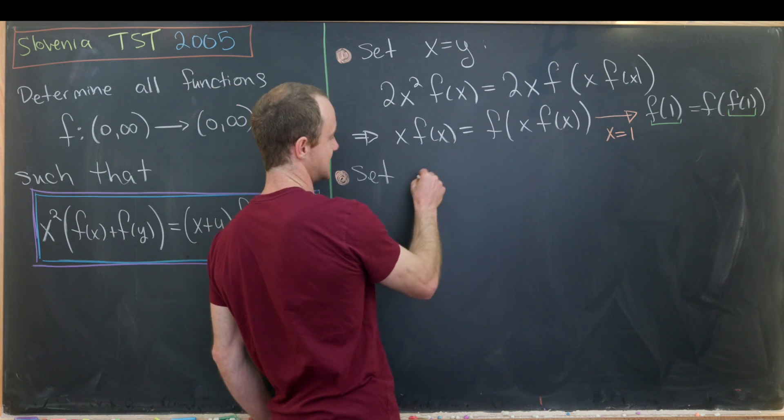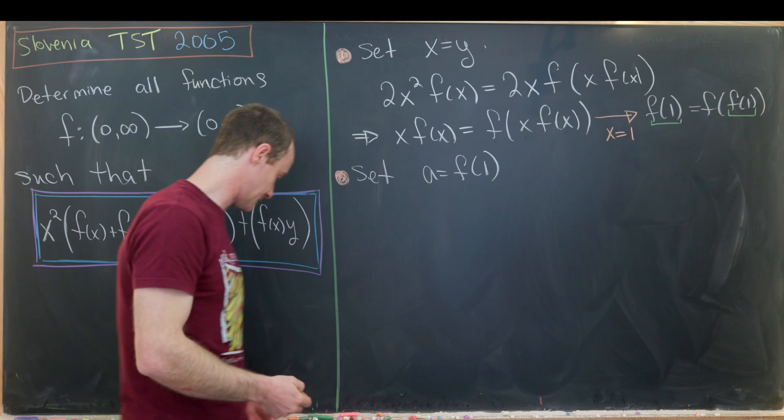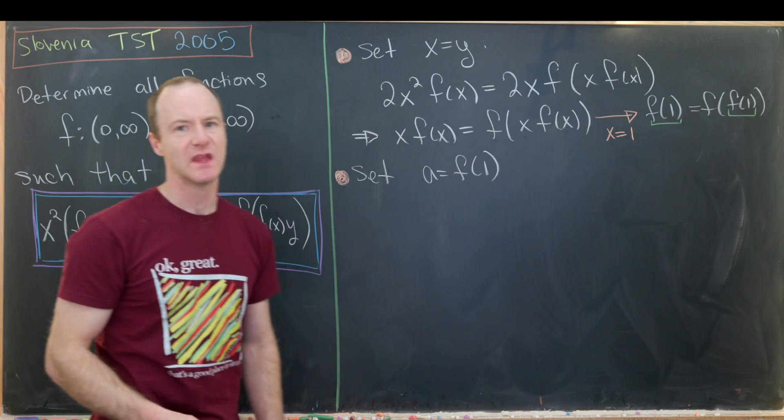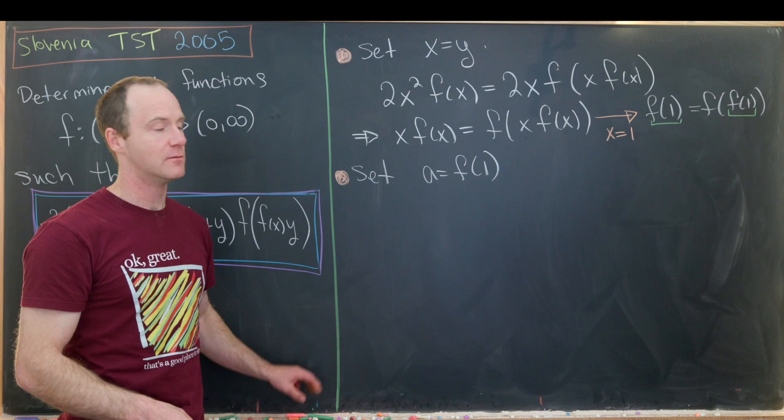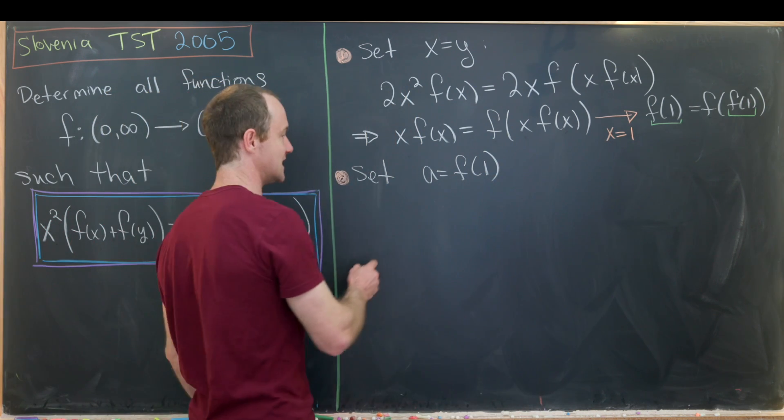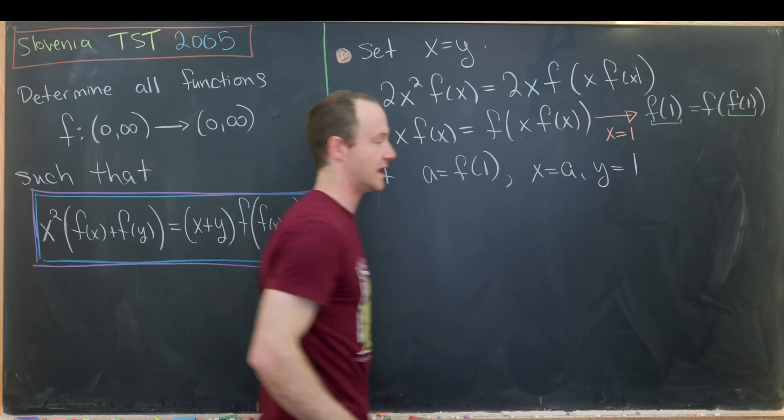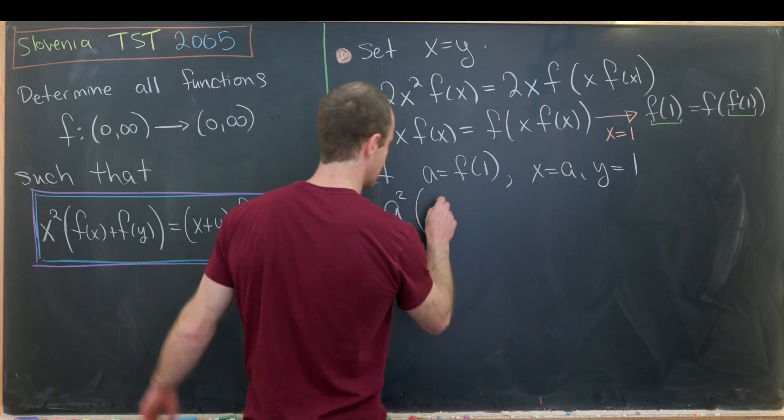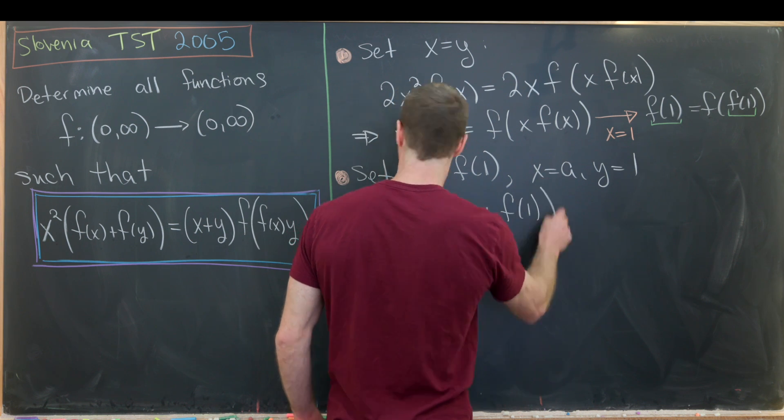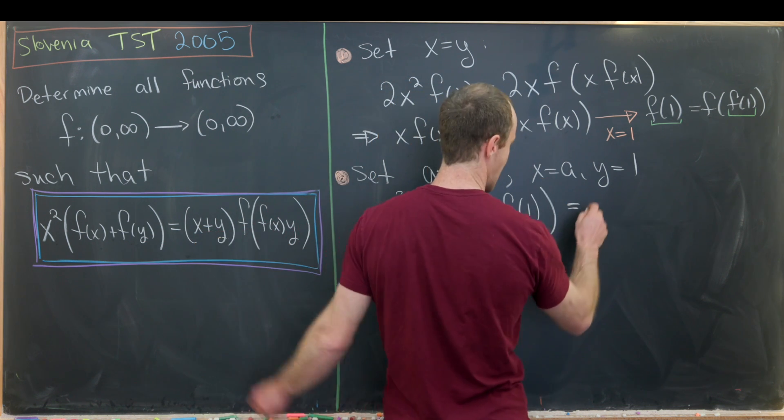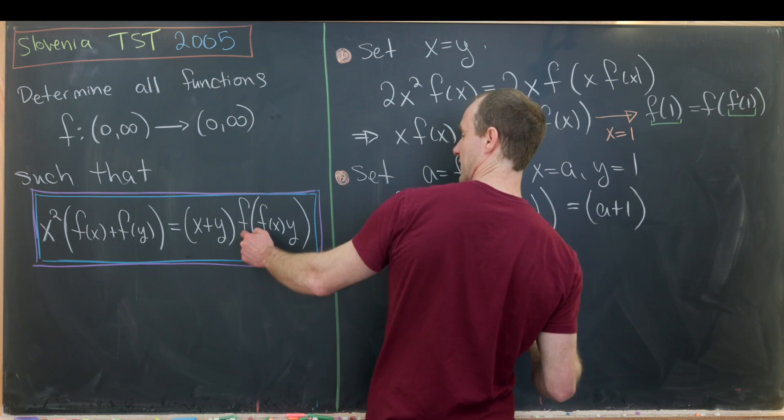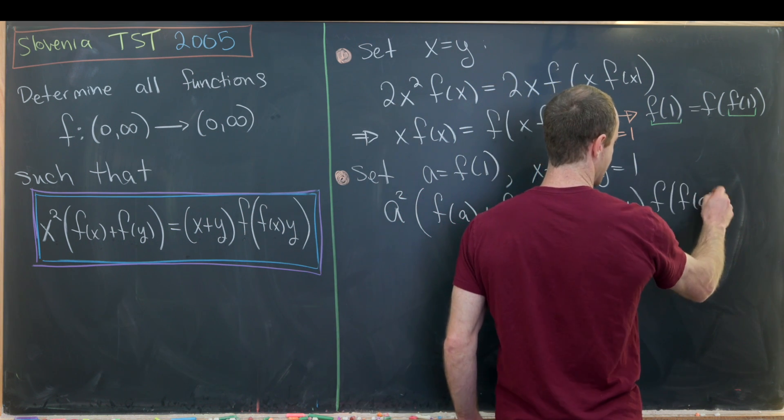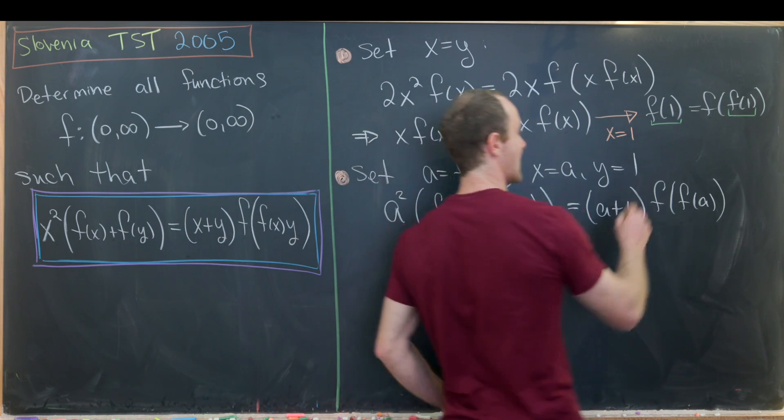So let's set a equal to f(1). Then that motivates us to put one and a into this functional equation. Generally, you'd probably like to try this both ways. But since we just put x equals one in here, we'll set x equal to a and y equal to one and see what happens. So we have x equals a, that gives me a². And then we'll have f(a) + f(1). That's the left hand side. And then over on the right hand side, we'll have a + 1, and then we'll have f evaluated at f(a) times one. So that's f(f(a)). But let's notice by the fact that we call this thing a, this f(1) equal to a,